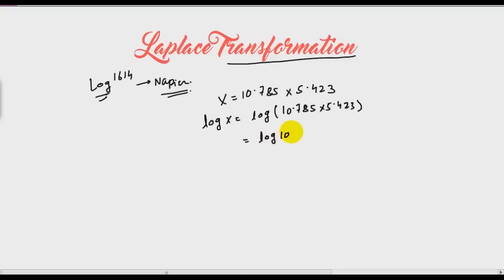So what he has done? He actually converted a multiplication into addition. And by tables you can easily find log 10.785, which is 1.0328, plus 0.7342. Log base 10 of x equals 1.767. If you take antilog of both sides, you will get x equals 10 raised to power 1.767, which equals 58.4. So he converted multiplication to addition.